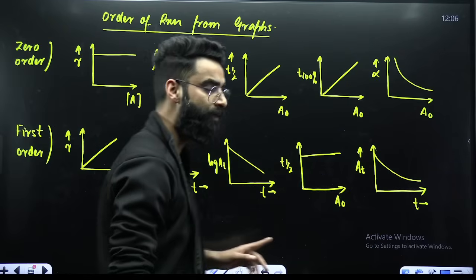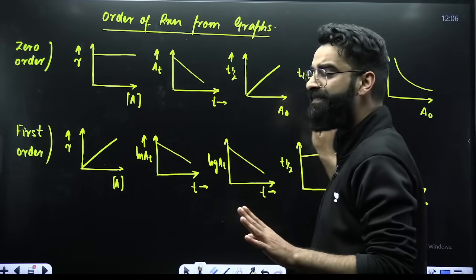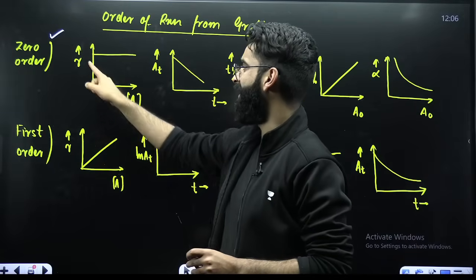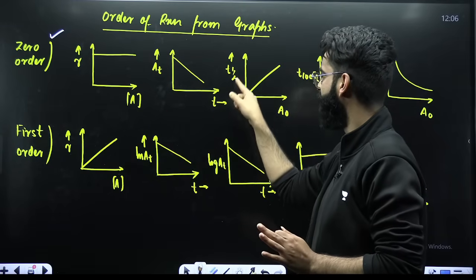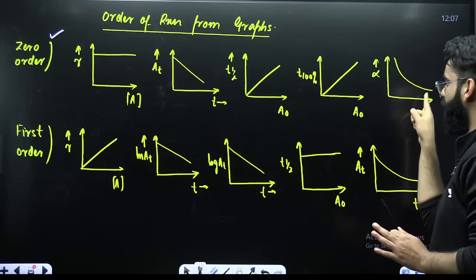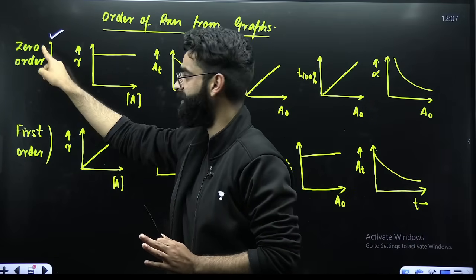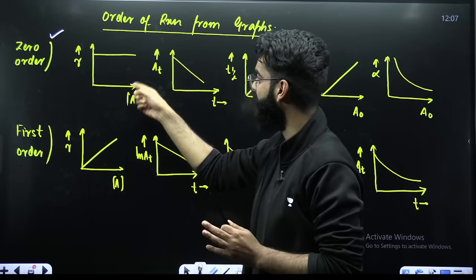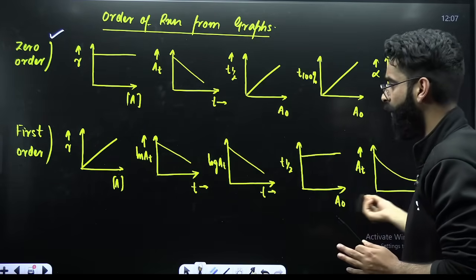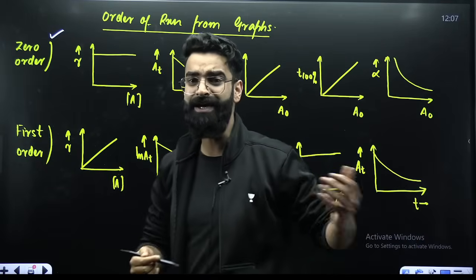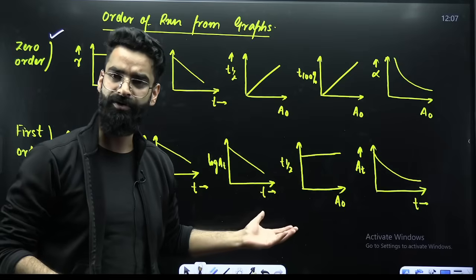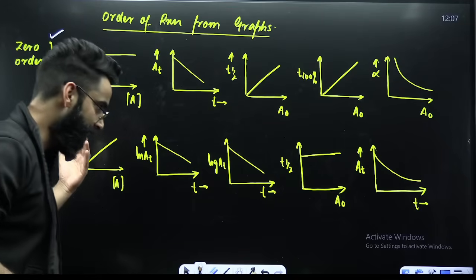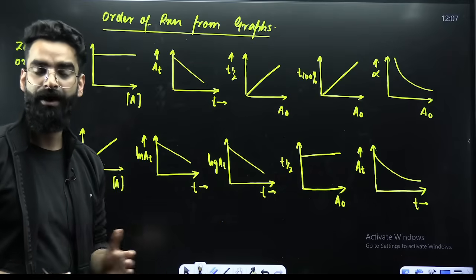One question can be asked in this format as well — just by looking at the graphs you have to identify the order of the reaction. Remember: for zero order reactions, rate is independent of reactant concentration, and specific graphs like A vs T, t-half vs A₀, completion time vs A₀, and alpha vs A₀ all correspond to zero order kinetics. Similarly, the graphs for first order reactions are a separate set. I've taught you all these graphs in detail in the chemical kinetics chapter — by knowing the type of graph you can easily identify the order of the reaction.